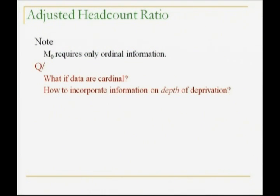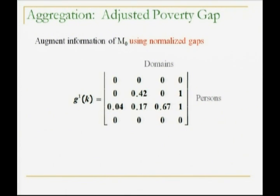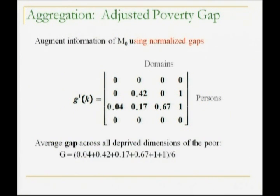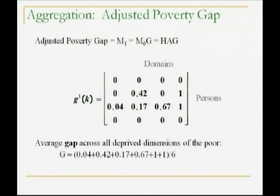M0 only requires ordinal data. What about cardinal data? Suppose we have the ability to measure depth in each dimension. Go back to this matrix, normalize gaps, G1 of K — look at the average gap across all non-zero entries across the dimensions of the poor. That's called G. Averaging up tells you on average how poor the poor are. Multiply that times M0, or multiply H times A times G, and you get what I call M1, the adjusted poverty gap.